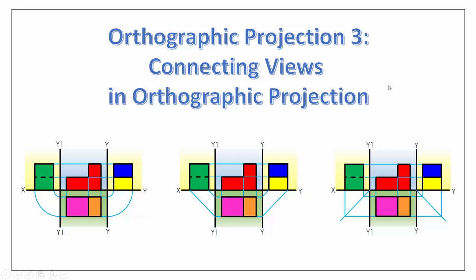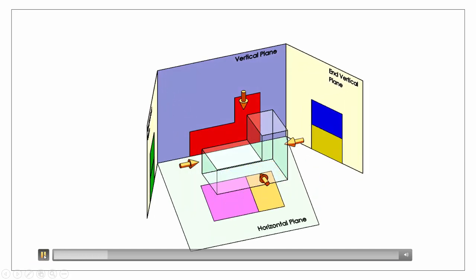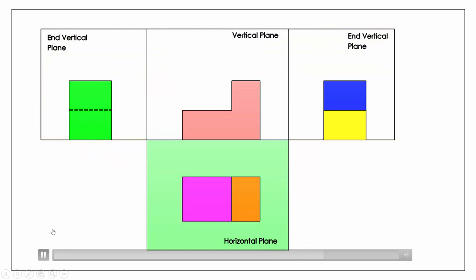To start with we're going to look at an animation from the last video in our series, where we take our projections of our various views — our front elevation, our plan view, and our two end views, left and right — and we fold out the object. You can see we take each of our projections and fold them out off of our vertical plane, giving us a 2D representation on our drawing sheet.